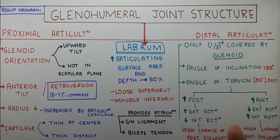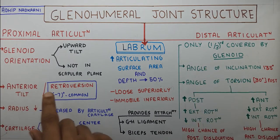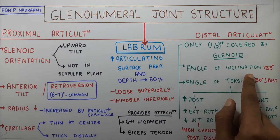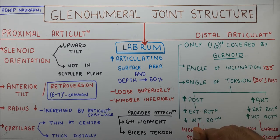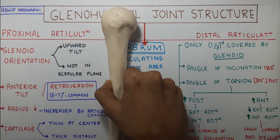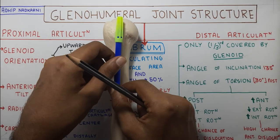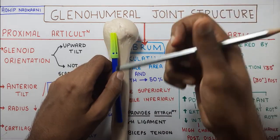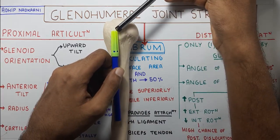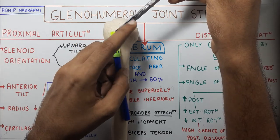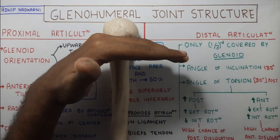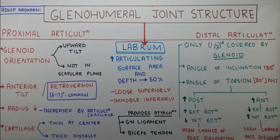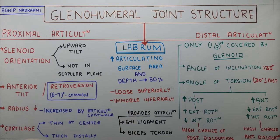Under distal articulation we will learn about two angles. There is the angle of inclination and the angle of torsion. For the angle of inclination, if you take the humerus and draw a vertical line through its long axis, the head is angled relative to that axis. The angle found between these two lines is called the angle of inclination - that is, how much the head of the humerus is inclined upward. That angle is around 135 degrees.